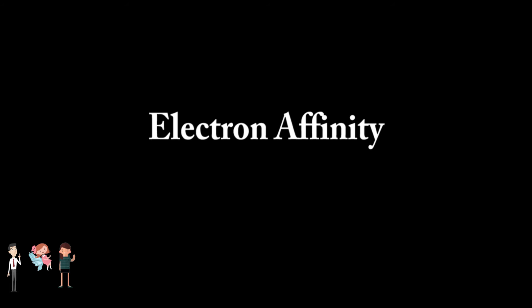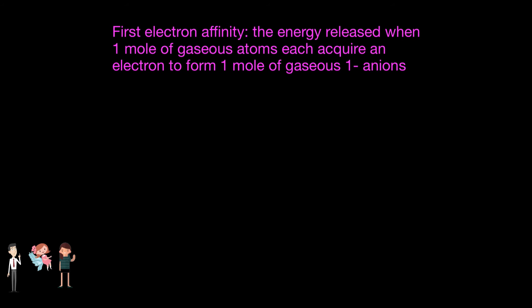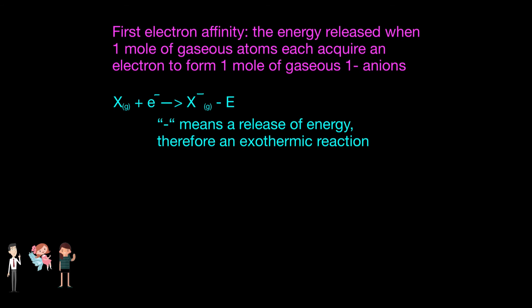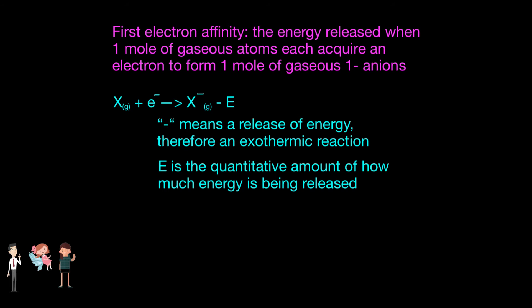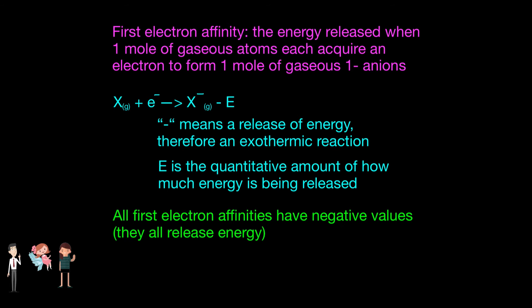I have one more periodic trend to teach you: the trend of electron affinity. If ionization energy was the energy needed to remove an electron, then electron affinity is the complete opposite. Electron affinity is the energy released when one mole of gaseous atoms each acquire an electron to form one mole of gaseous ions. The first electron affinity is represented by an equation where E represents the energy released per mole of X when this change takes place. Because there is a release of energy, this is an exothermic reaction, and E is a quantitative amount of how much energy is released. For example, the first electron affinity of chlorine is negative 349 kilojoules per mole. All first electron affinities have negative values, meaning that all first electron affinities are exothermic.